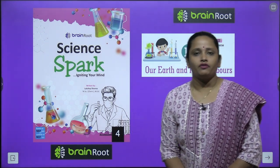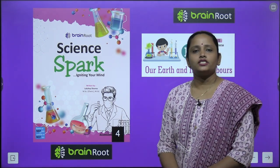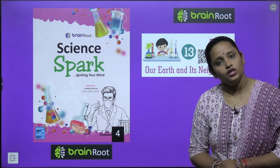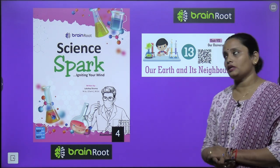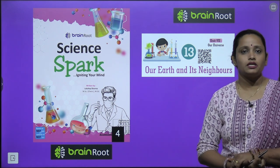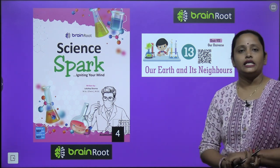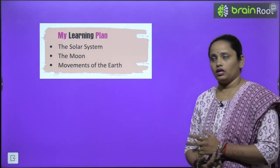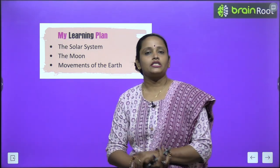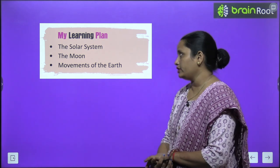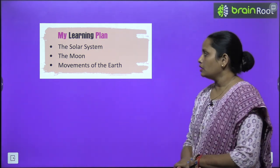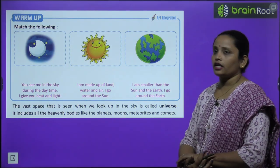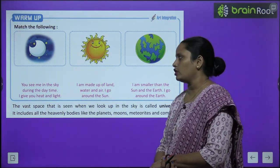Hello my dear kids, welcome back. I am Vandana and we are learning science of class 4 by Brain Root series, and here is your book Science Park. Today we are going to start with chapter number 13, and the name is 'Our Earth and Its Neighbors.' We are going to cover the solar system, the moon, and movements of the earth. Let's start the chapter with the warm-up exercise: match the following.